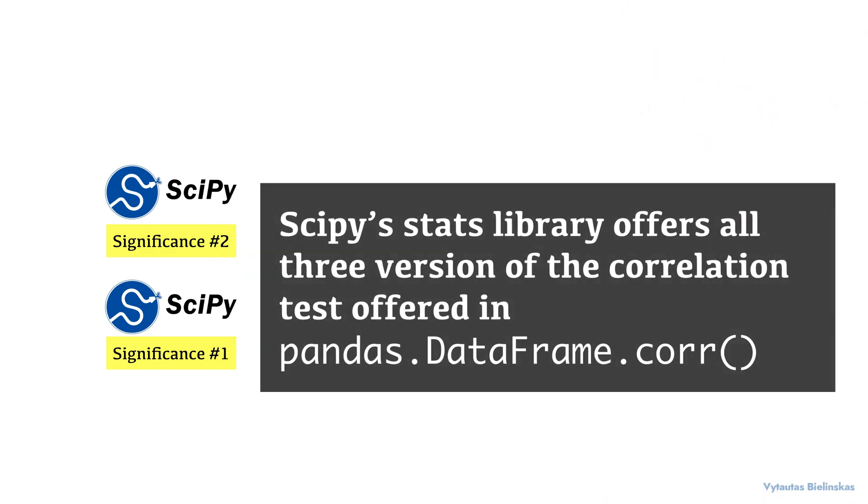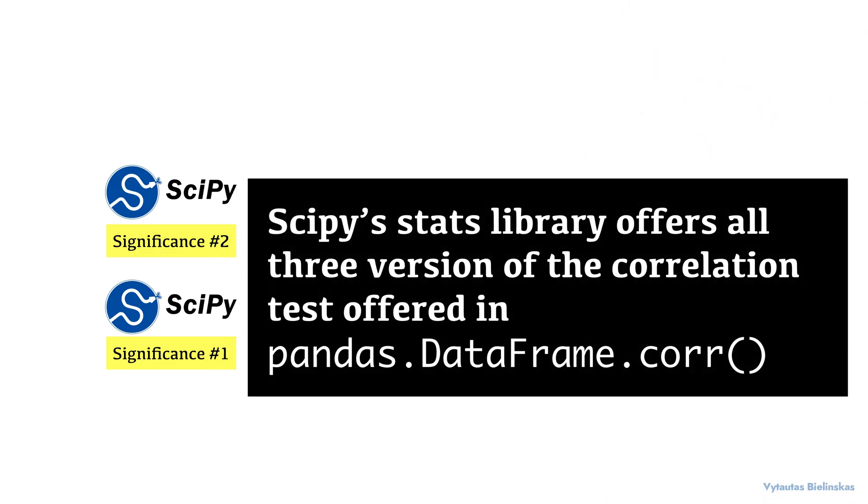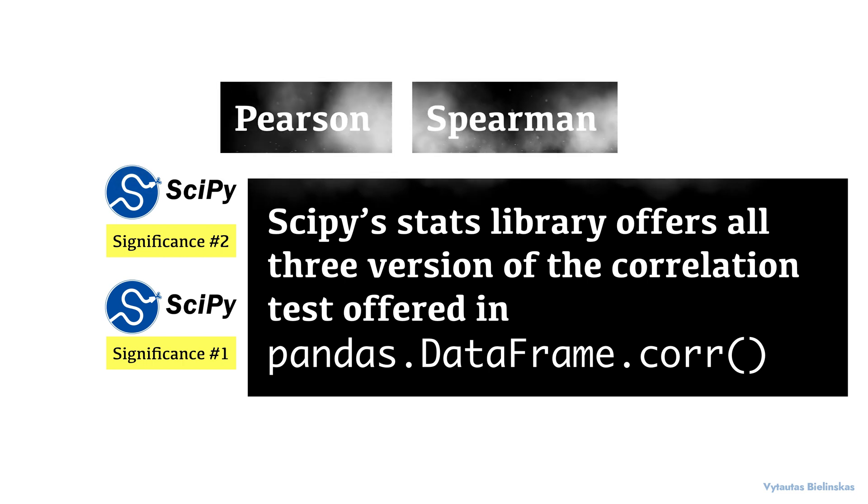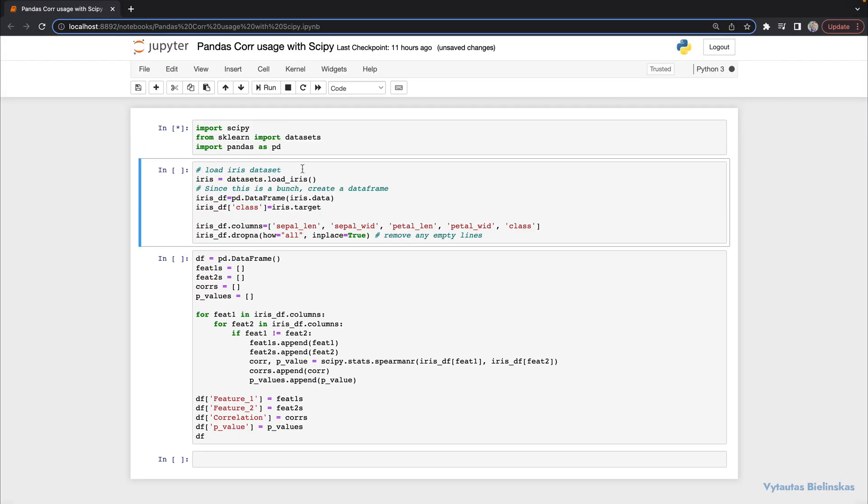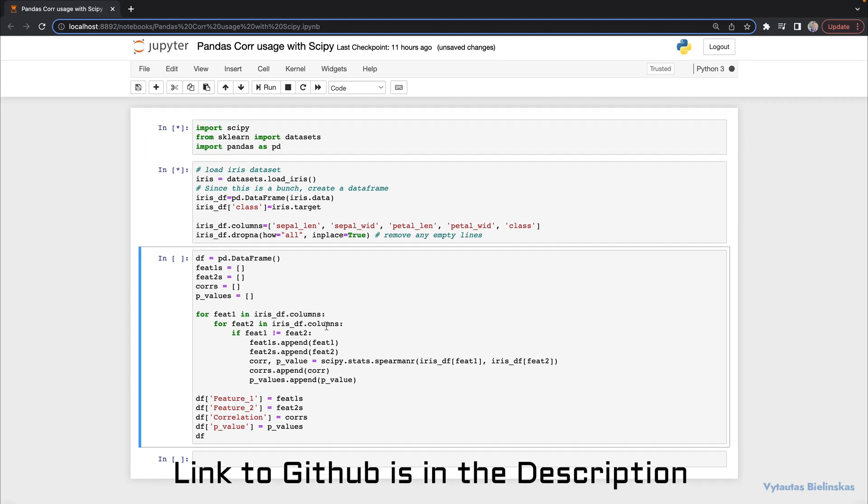Scipy stats library offers all three versions of the correlation tests offered by pandas dataframe core, for example, Pearson, Spearman, and Kendall-Tau. Using it is as simple as passing in the columns of the dataframe you want to compare. Consider the snippet right here in the Python code.